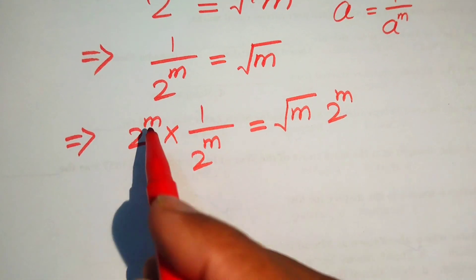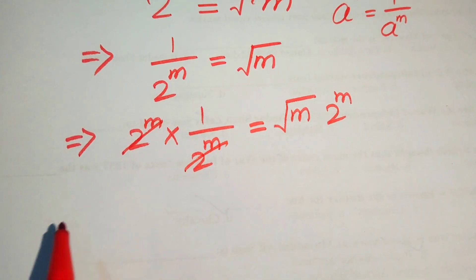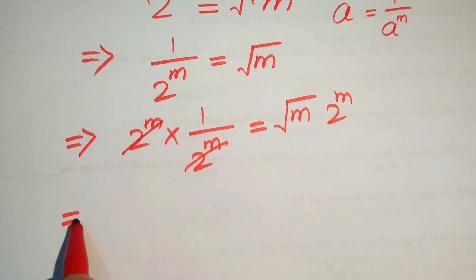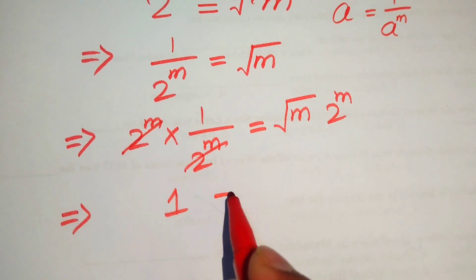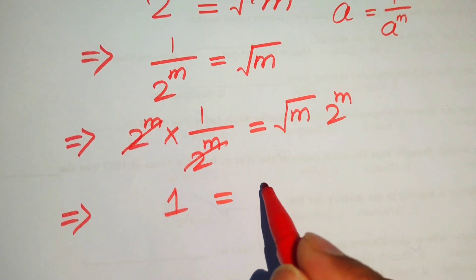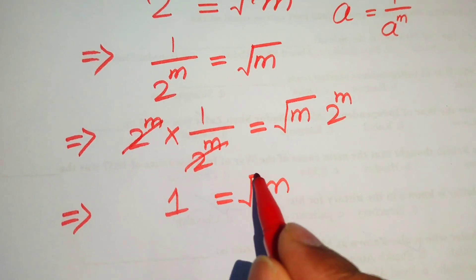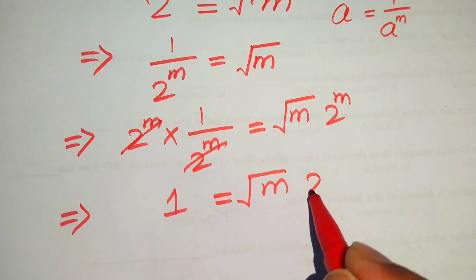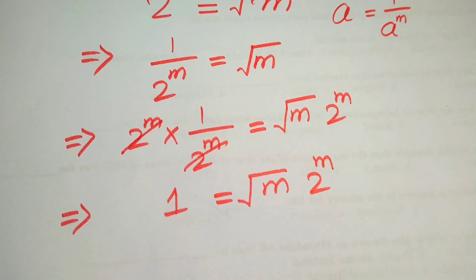After multiplying both sides by 2 to the power of m, the 2^m terms cancel on the left hand side, leaving only 1, and the right hand side becomes square root of m times 2 to the power of m.